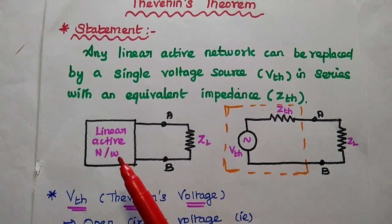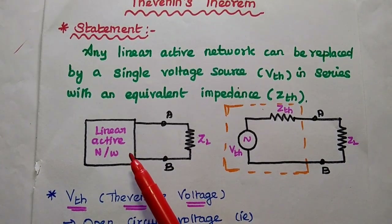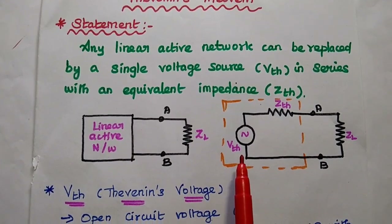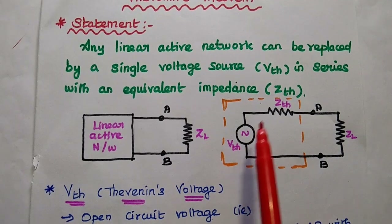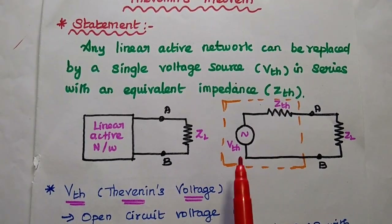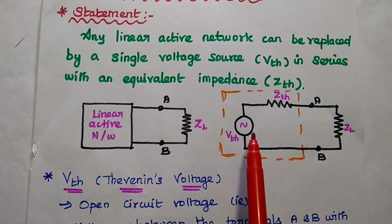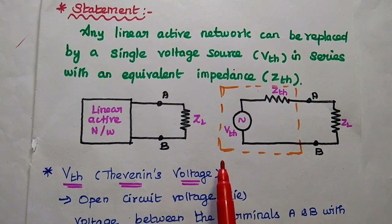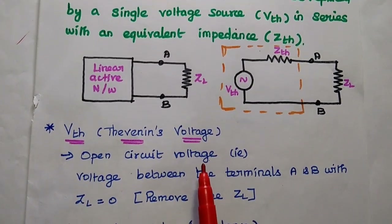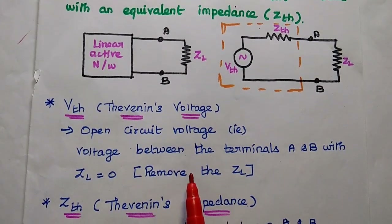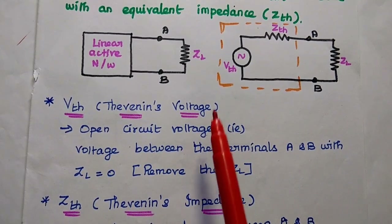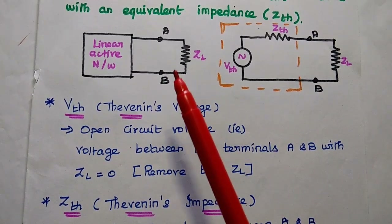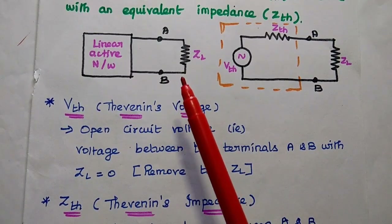This linear active network may have a number of resistors, capacitors, and inductors, but that can be simplified with this equivalent circuit — a voltage source in series with an equivalent impedance. Here, VTH is known as Thevenin's voltage, also called open circuit voltage, because it can be obtained by removing the load impedance and measuring the voltage between terminals A and B.